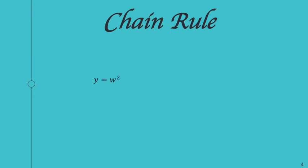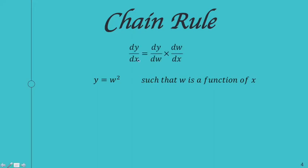For another example, y = w². We need to assume that w is a function of x so that we have a composite function, because the chain rule applies to composite functions. So the chain rule is dy/dx = dy/dw × dw/dx. Our y = w², so the first factor is the derivative of w² with respect to w, and then multiply by dw/dx.